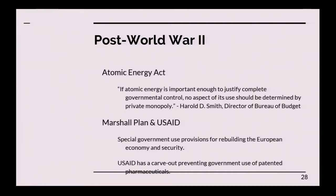Post-World War II, there were two major compulsory licensing statutes. One was industry-specific: the Atomic Energy Act. Under the Atomic Energy Act, the U.S. government actually seized all atomic energy patents in the United States. Harold D. Smith, director of the Bureau of the Budget, said: 'If atomic energy is important enough to justify complete governmental control, no aspect of its use should be determined by private monopoly.' After seizing all the patents, they also included a compulsory licensing provision for other patents useful in the production of atomic energy — only for non-military use, not for building atomic weapons — creating a process allowing people to appeal to the Atomic Energy Commission for a compulsory license.